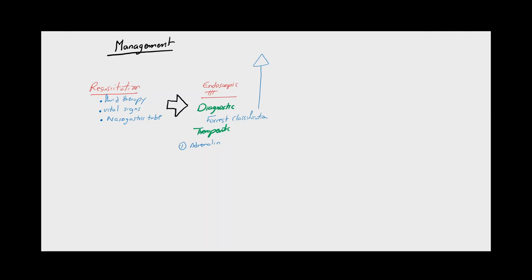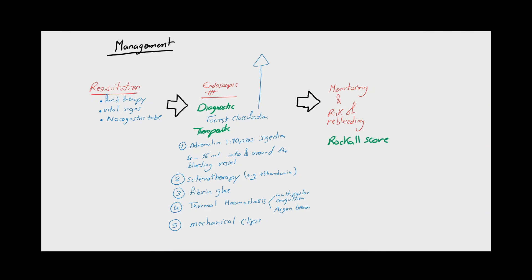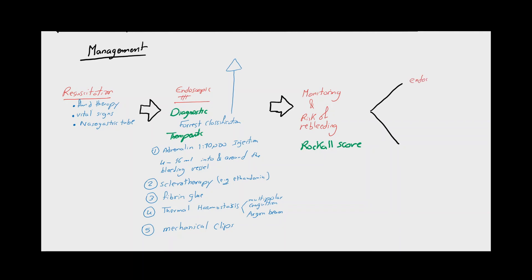Therapeutic endoscopic maneuvers include injection of adrenaline into and around the bleeding site, which leads to rapid vasoconstriction and control of bleeding in about 90% of cases. The second option is sclerotherapy, for example ethanolamine injection or the application of fibrin glue. Thermal coagulation is also possible using a multipolar coagulator or laser argon beamer. And lastly, application of mechanical clips is very useful in cases of vascular bleeding. After bleeding control, the patient is usually transferred to the intensive care unit in which close monitoring is carried out. Here the risk of rebleeding must be estimated, and accordingly further endoscopic follow-up or surgery is planned.